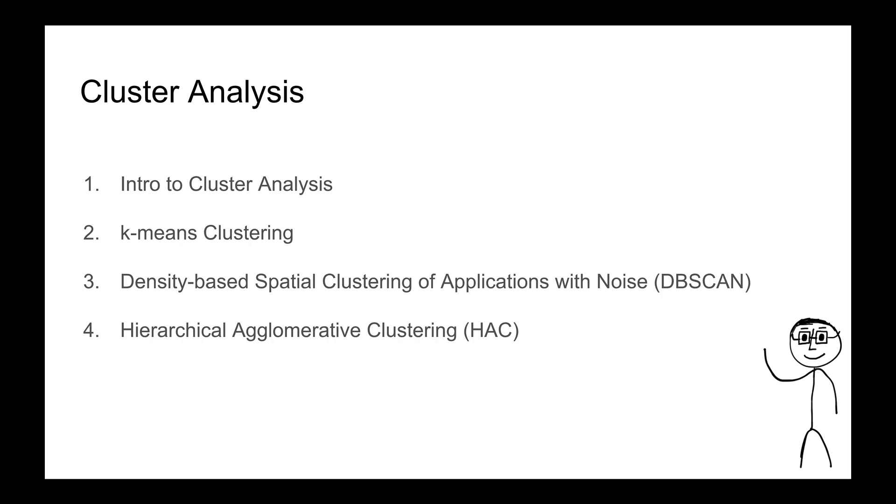DBSCAN, which stands for density-based spatial clustering of applications with noise, but usually just called DBSCAN, and then hierarchical agglomerative clustering, HAC. So these are three very popular clustering algorithms, and the interesting thing is they all take very different approaches to creating clusters, and we're going to get into all those in the subsequent videos.